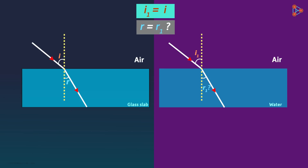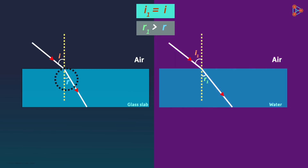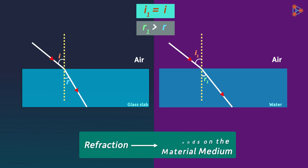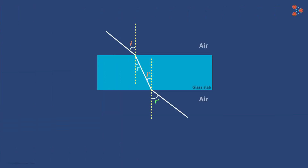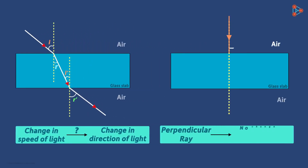Bending of light varies in different media. Bending in glass is more but bending in water is less, because water is less dense than glass and the speed of light is greater in water than in glass. So air-to-glass bending is more and air-to-water bending is less. If the angle of incidence is the same in both cases, the angle of refraction in glass will be less than in water, since glass is denser.